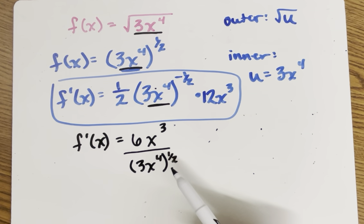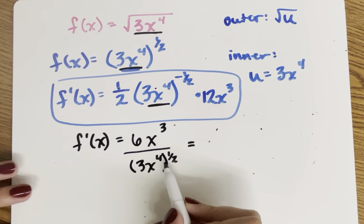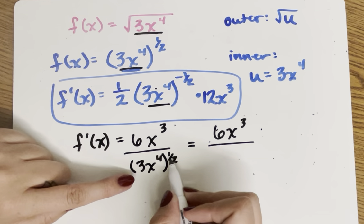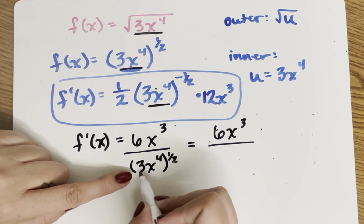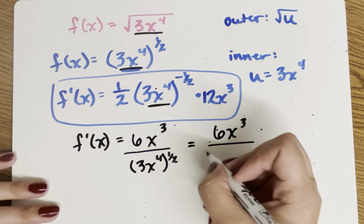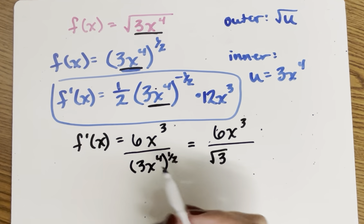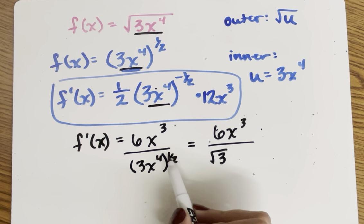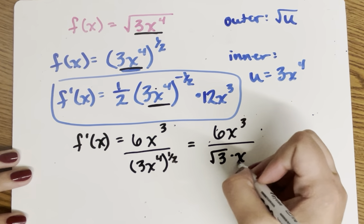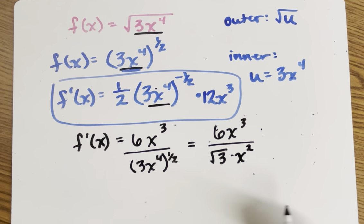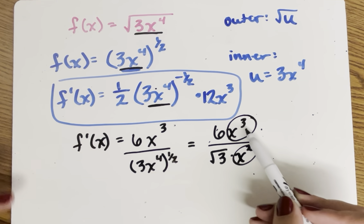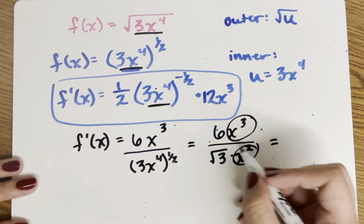If you have this on a multiple choice question, they might simplify further. We still have 6x cubed. The one half exponent applies to everything — to the 3 and to x to the fourth. So I'm going to rewrite 3 to the one half as radical 3. Then x to the fourth to the one half: multiplying exponents, 4 times one half is 2, so this is just x squared. Now there are no x's left inside a radical, and I can simplify x cubed over x squared, which is just x. So I have 6x over radical 3.